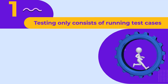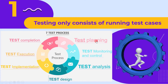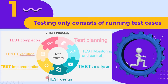The first misconception is that testing only consists of running test cases, which is completely wrong. Testing is a process and consists of many activities: test planning, test monitoring and control, test analysis, test design, test implementation, test execution, and test completion. We will discuss each of these activities in detail in future lectures, but remember these activities in the same order as listed.